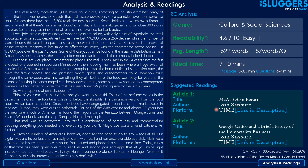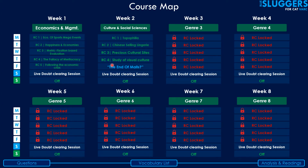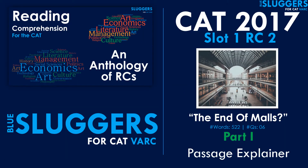Finally, suggested readings based on this RC's genre are provided — title, author, and platform — with links in the video description. Go through those articles for more exposure to this genre and topic. That completes the reading and analysis section. With this, we're done with this particular RC — the fifth RC in the Culture and Social Sciences genre. The next genre will be Politics and Governance.